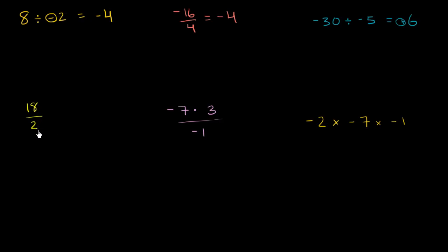18 divided by 2 — and this is a little bit of a trick question. This is what you knew how to do before we even talked about negative numbers. This is a positive divided by a positive, which is going to be a positive. So that is going to be equal to positive 9.